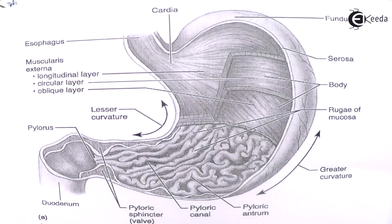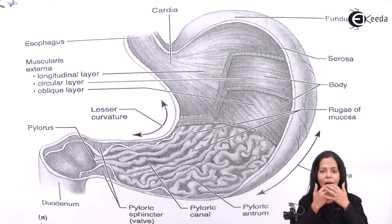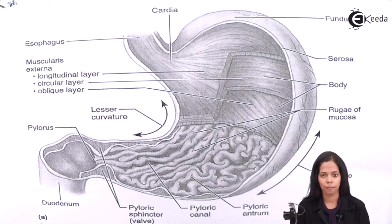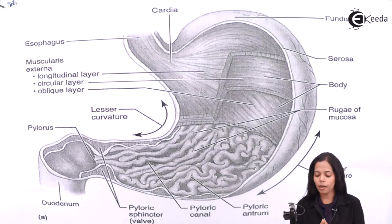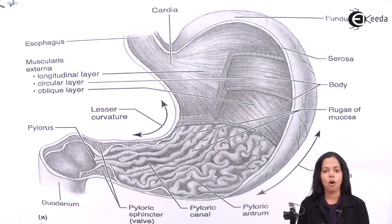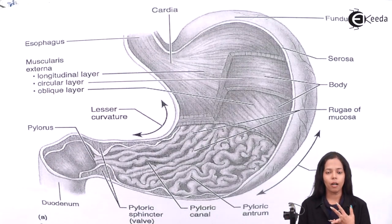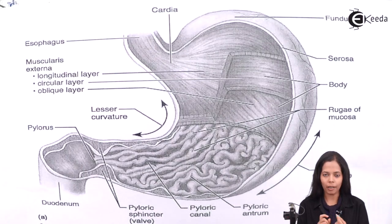What are the parts of the stomach? First, note that the stomach is the widest part of the alimentary canal. The stomach consists of four parts: fundus, cardia, body, and pyloric part.